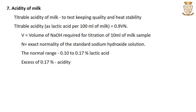Next is the test for the acidity of milk. The titratable acidity of milk is estimated to ascertain its keeping quality and heat stability. This test measures the amount of alkali (sodium hydroxide) required to change the pH of milk from its initial value to a pH of 8.33. This is done as a titration using the indicator phenolphthalein. The titratable acidity is calculated as lactic acid per 100 ml of milk, which equals 0.9 × V × N, where V is the volume in ml of standard sodium hydroxide required for titration of 10 ml of milk sample and N is the normality of the sodium hydroxide solution. The normal range of acidity of milk varies from 0.1 to 0.17% lactic acid, and any value in excess of 0.17% is considered as developed lactic acid.